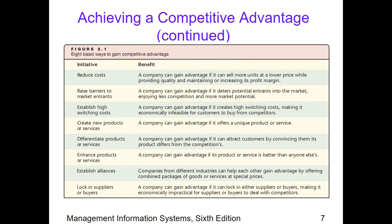Next is to establish high switching costs, which makes it economically infeasible for customers to buy from competitors or challenging for them to buy from others. Next is to create new products or services — for established companies, it would be easier for customers to buy from us. For example, new models of cell phones or gadgets from Apple products — people would be buying because there is something new.